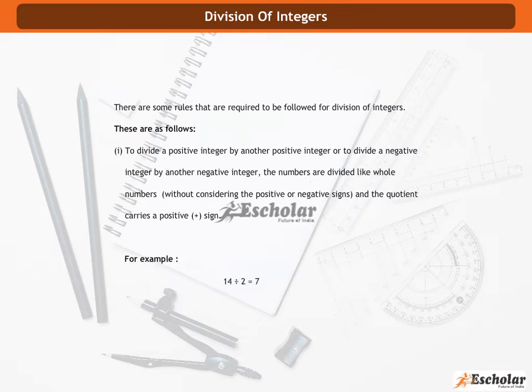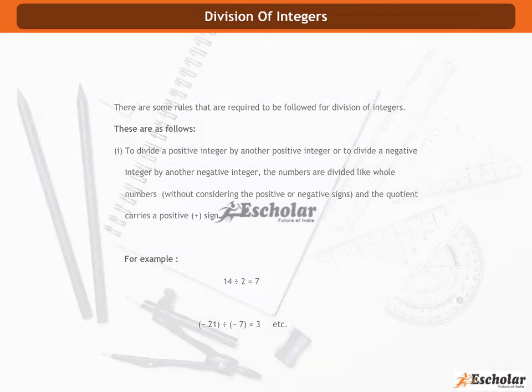For example, 14 divided by 2 is equal to 7. Minus 21 divided by minus 7 is equal to 3, etc.